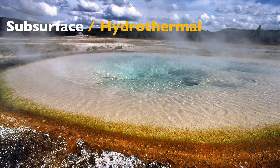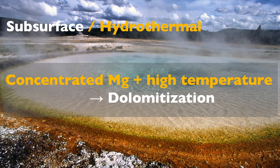The third option is to have subsurface or hydrothermal fluids. These are good fluids for dolomitization because they typically contain concentrated magnesium — they've been in contact with all sorts of different lithologies for a long time. They're also usually at high temperature, and remember that even in the lab it's not complicated to precipitate dolomite above 60 or 80 degrees. That would be late dolomitization, not early diagenetic dolomitization. But these are three fluids that are potentially good for dolomitization.